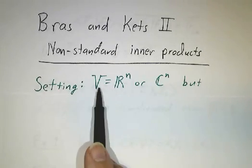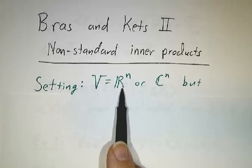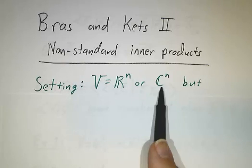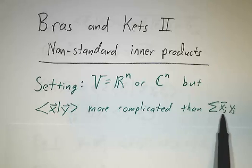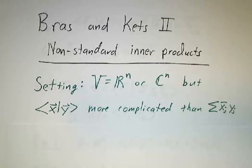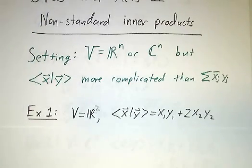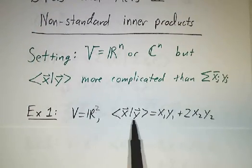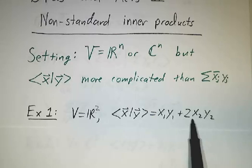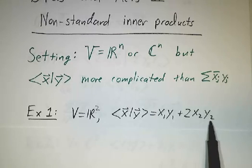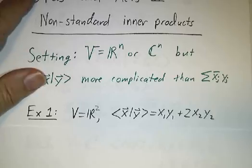So our vector space, as always, is going to be columns of real numbers or columns of complex numbers. But we're going to use an inner product that's more complicated than just the sum of x_j bar y_j. For example, we might look at R^2, but we'll use the non-standard inner product where the inner product of x and y is x1 y1 plus twice x2 y2. Not the usual choice, but it's an inner product.